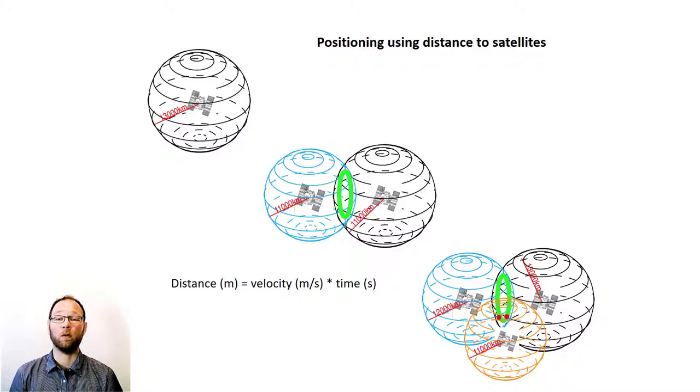We must also know accurately where the satellites are located at each time. This information is called satellite ephemeris or satellite orbits and these are calculated and published by international agencies.